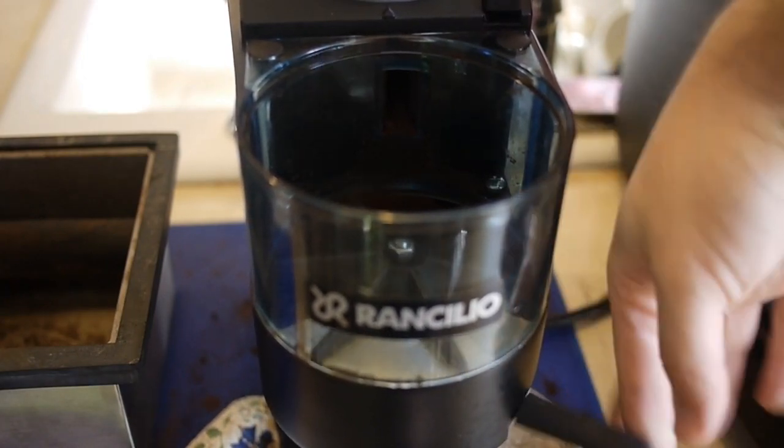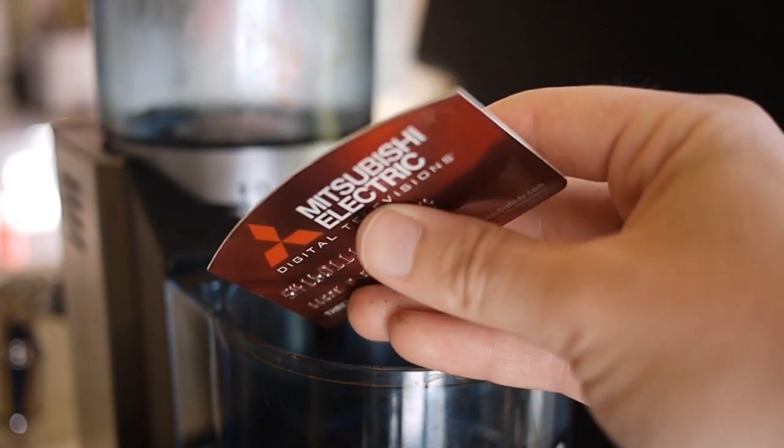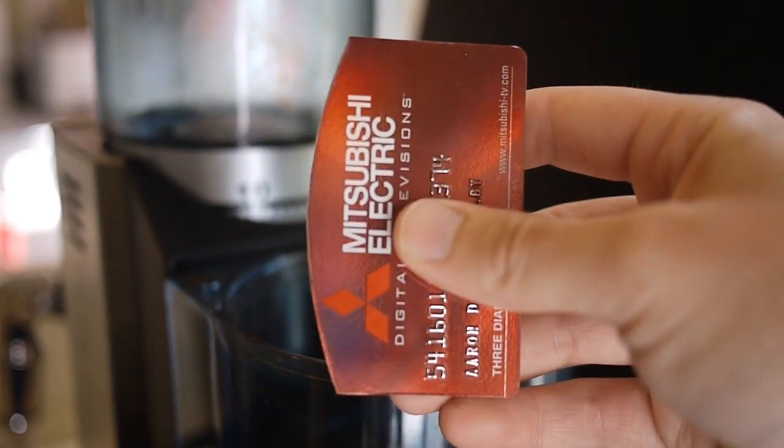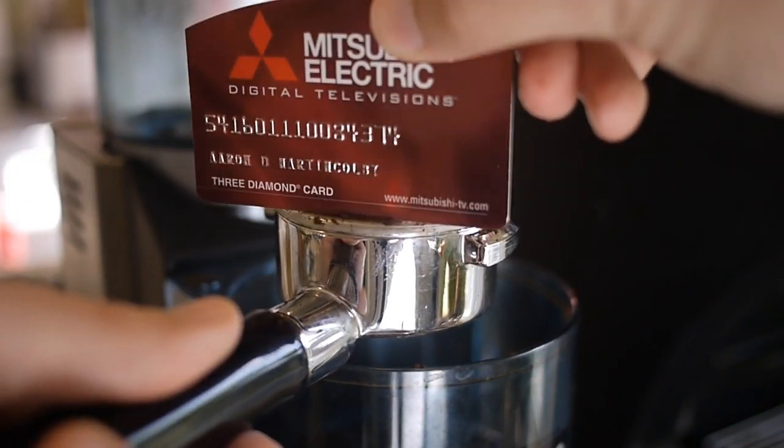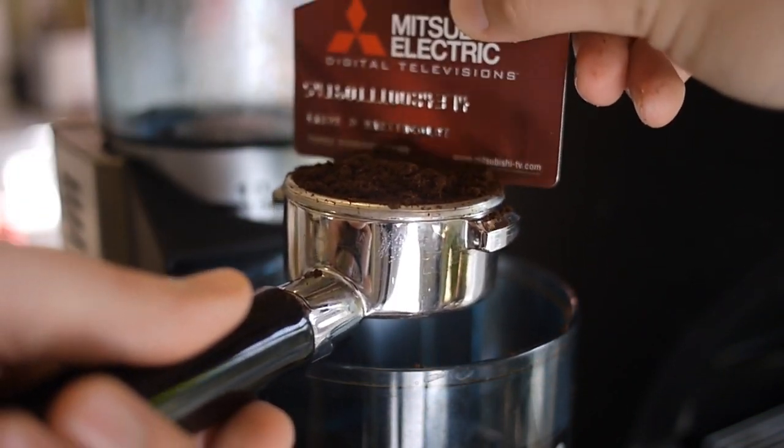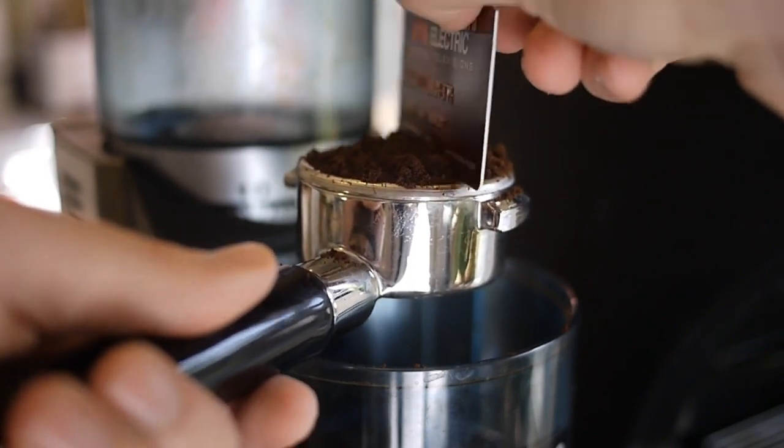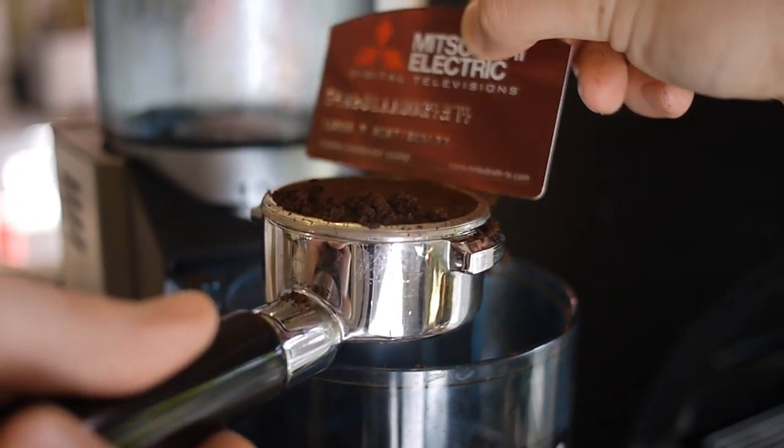You can also do what I did. I took one of those fake credit cards that everyone gets in the mail and cut one side with the edge of a large bowl, creating a curve, and kept one side flat. This lets me chop up the coffee grounds, level, and also flip the card around to adjust the dose with the curved side if I feel the need.